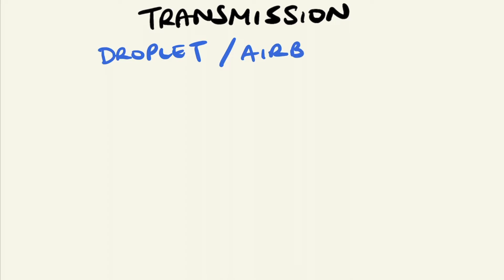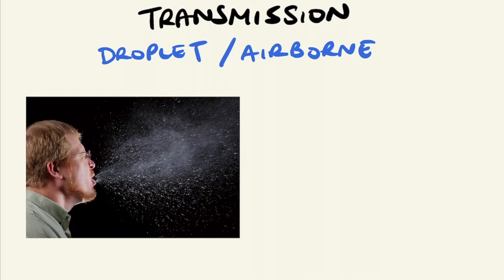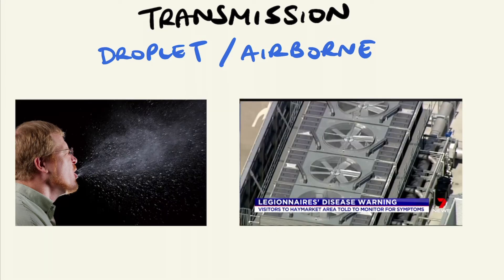Droplet and airborne contamination: mucus secretions emitted from coughing or sneezing can create droplets or aerosol infections that have the potential to transmit over certain distances — for example, influenza. Droplets can also come from the environment such as soil or water and cause infections. Environmental examples include the transmission of Legionella from aerosolized droplets from water-based cooling towers.